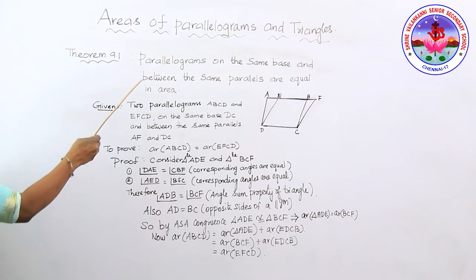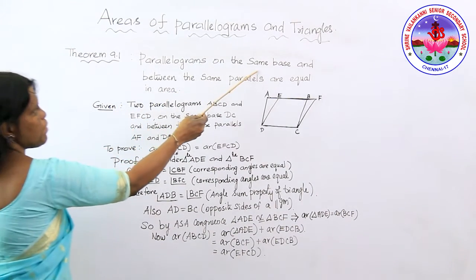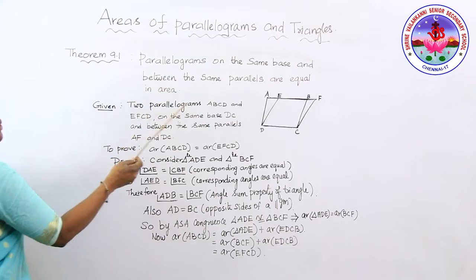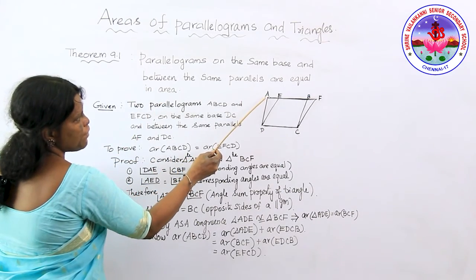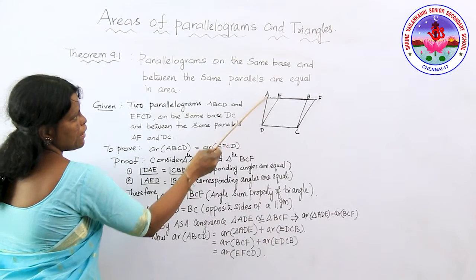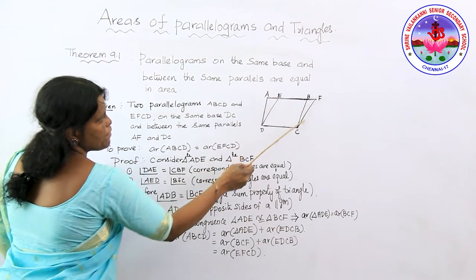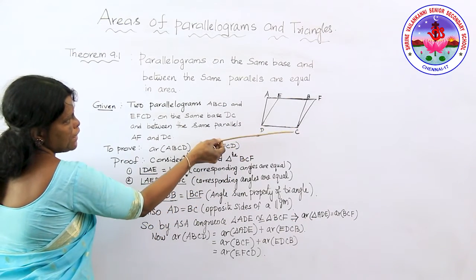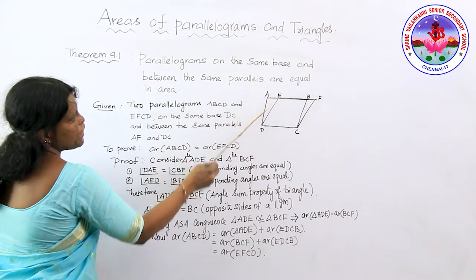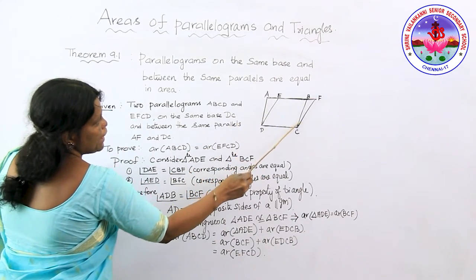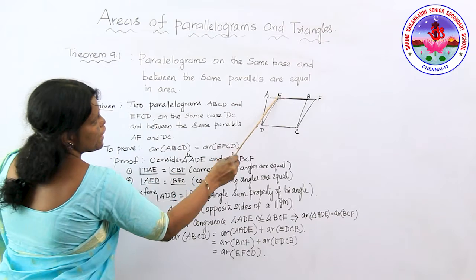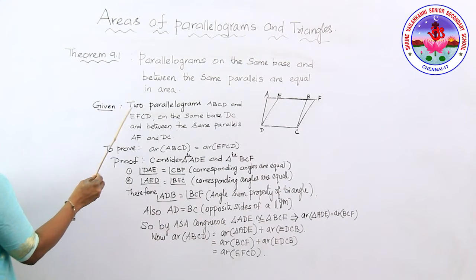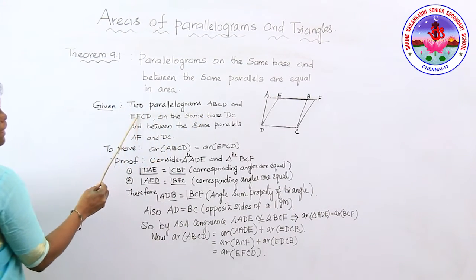Now, coming to the theorem: parallelograms on the same base and between the same parallels are equal in their area. Here I have drawn parallelogram ABCD and parallelogram EFCD. These two parallelograms lie on the same base and between the same two parallels. We are going to prove that the area of parallelogram ABCD is equal to the area of parallelogram EFCD.